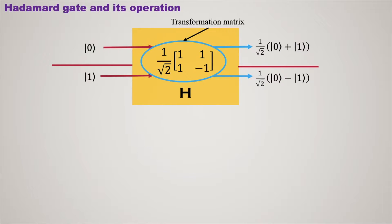Two consecutive Hadamard operations is an identity operation — that is, if you apply the H operation twice on a state, you are doing nothing to it.